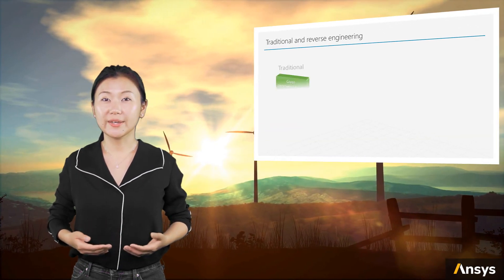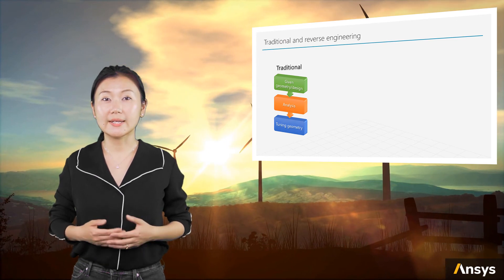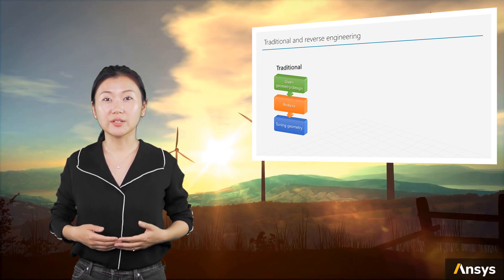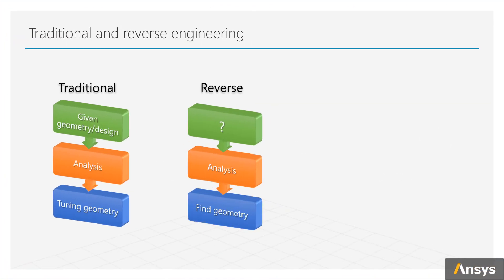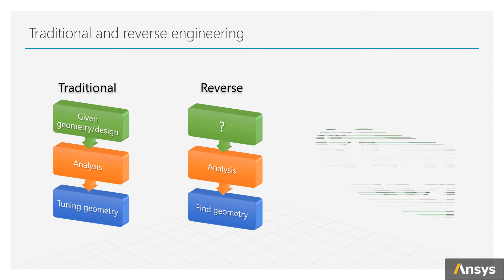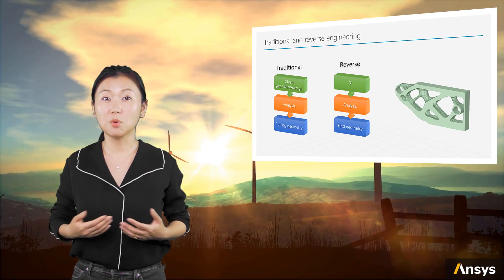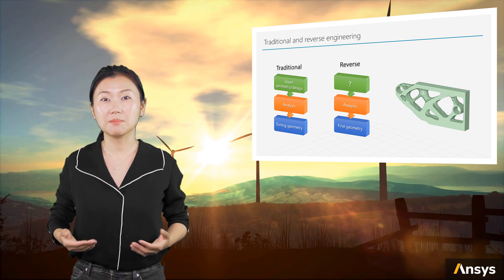While traditionally it is the engineer's role to dictate the shape of the structure, now with advances in technology, the computer can help tell us what the best shape is. This reverse design process relies on topology optimization technology. Due to the free form of the geometry from topology optimization, this technology is mostly used in 3D printing or customized manufacturing.